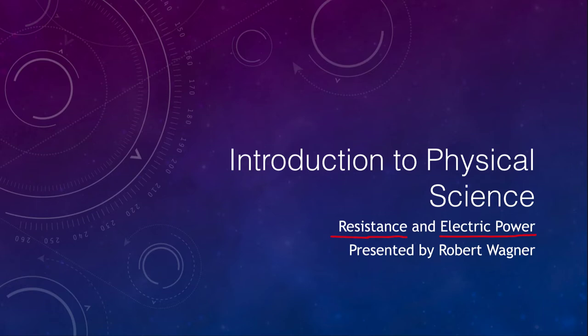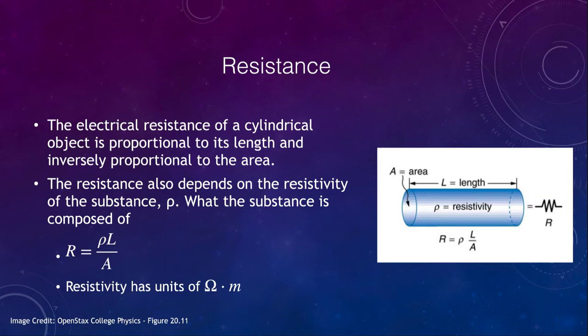Let's get started and look first at the concept of resistance. Resistance is the resistance to the flow of electricity. Some things have a very low resistance — objects like metals. Other objects have a very high resistance and we call those insulators — things that do not easily allow electricity to flow. Things like rubbers and plastics generally resist the flow of electricity and serve as good insulators.